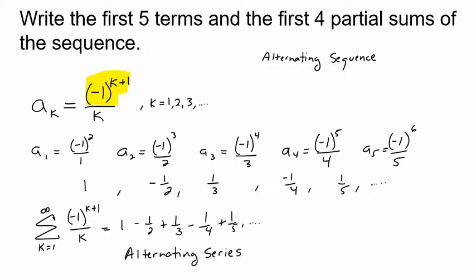So in an alternating sequence or an alternating series if you're adding them up you're going to see one of these two things usually: negative 1 to the k or negative 1 to the k plus 1. There's really no reason to write negative 1 to the k plus 2 because that's just going to give you the same result as negative 1 to the k.